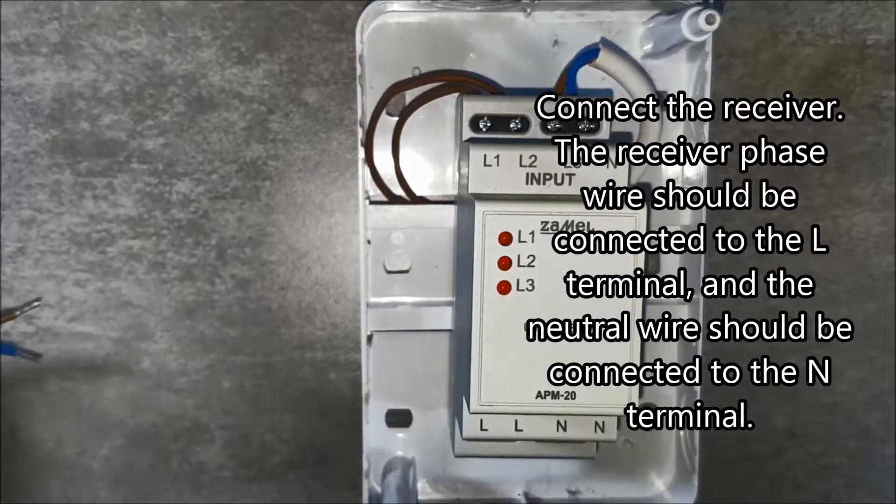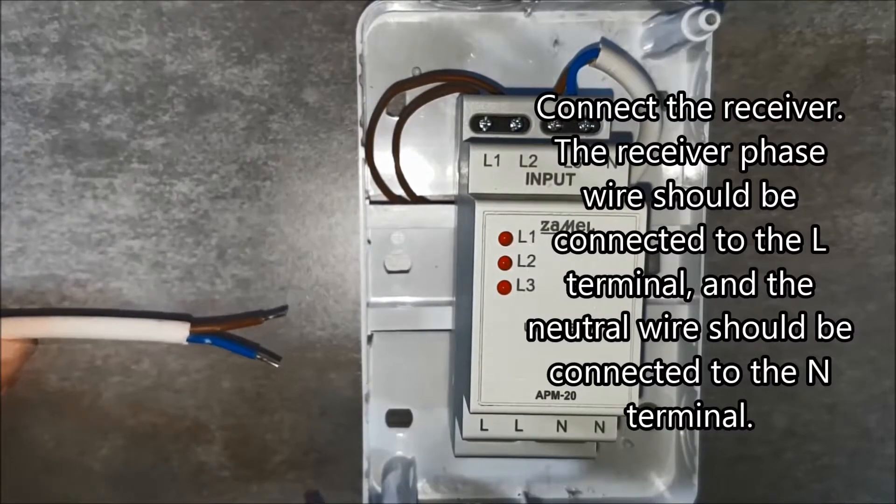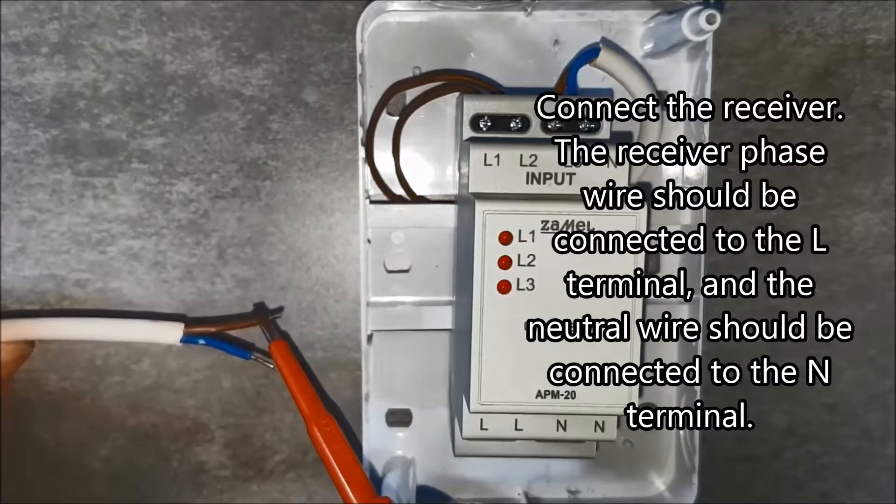Connect the receiver. The receiver phase wire should be connected to the L terminal, and the neutral wire should be connected to the N terminal.